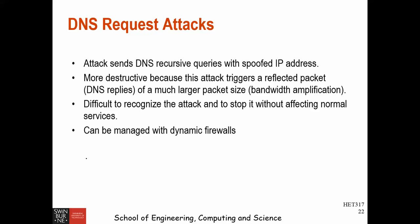The fifth type is the DNS request attack. The attacker sends DNS recursive queries with a spoofed IP address, flooding the DNS server. The DNS server then sends replies to the victim. This has a much larger packet size so the bandwidth is amplified. It is difficult to recognize and stop without affecting normal services, but can be managed with a dynamic firewall.